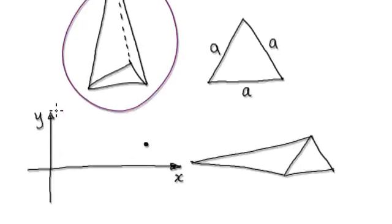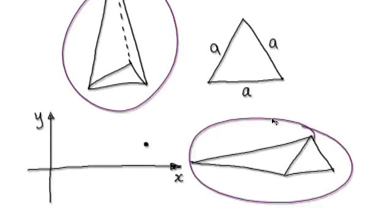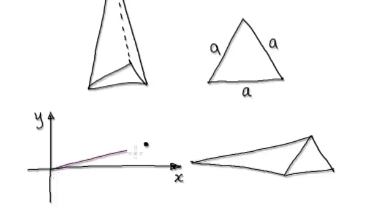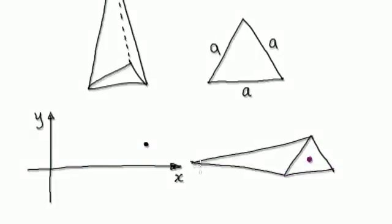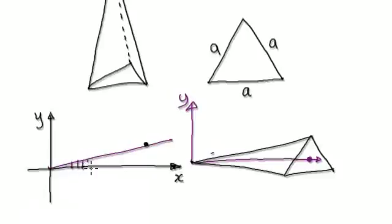Let's rotate this solid so it now looks like this. The idea is that we are going to use calculus. Looking at this triangle, the center is right here, and our x-axis will go through the center. This is going to be our y-axis. We're going to sum up everything as we move in the x direction, so it's going to be dx.